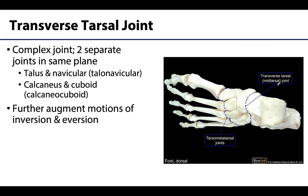The transverse tarsal joint is more complicated, as it is a complex joint formed by two separate intertarsal joints located on the same plane, as indicated by this dashed line — between the talus and the navicular, and between the calcaneus and the cuboid. You don't need to memorize the navicular or cuboid specifically; just understand it's distal to the talus-calcaneus complex. While not the primary joint for inversion and eversion, it certainly augments these motions, so you commonly see that inversion and eversion occur at both the subtalar and transverse tarsal joints.